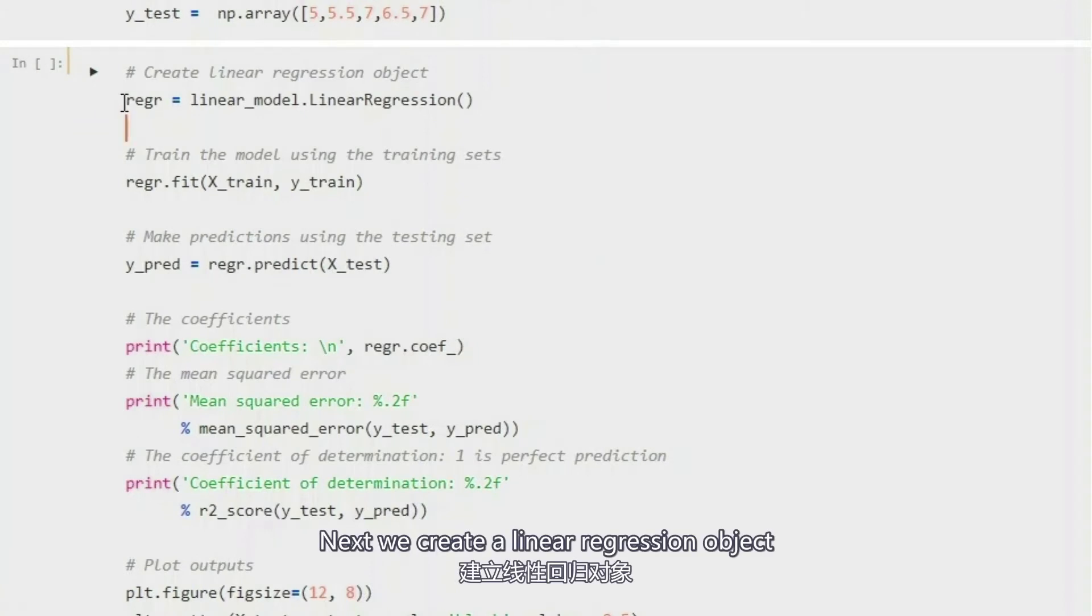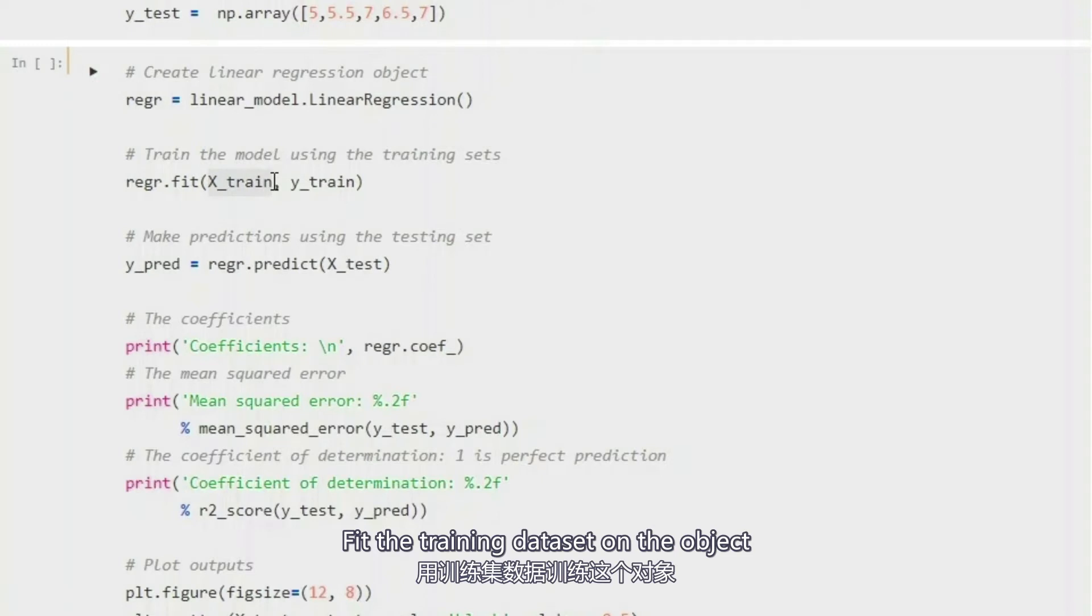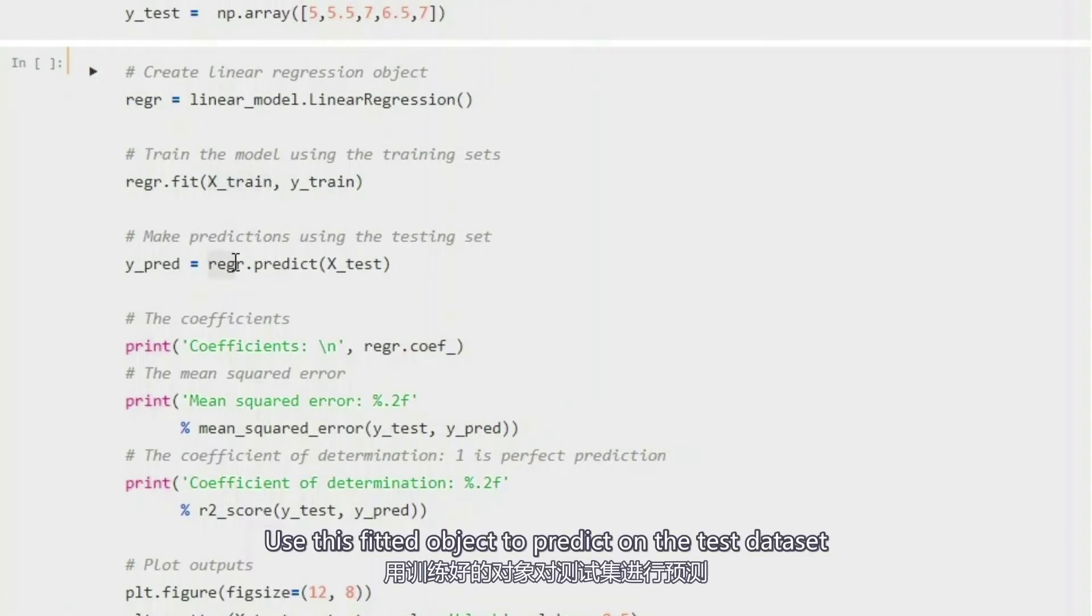Next we create a linear model object, and then we fit the training data set on this object, and use this fitted object to predict on the test data set.